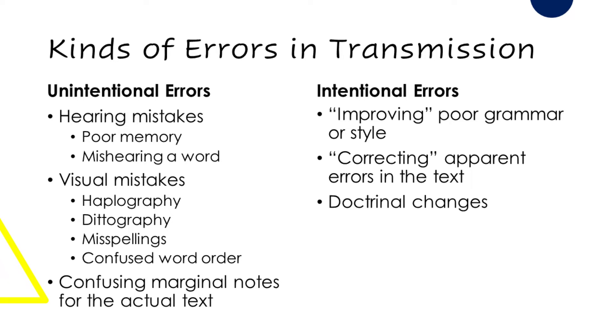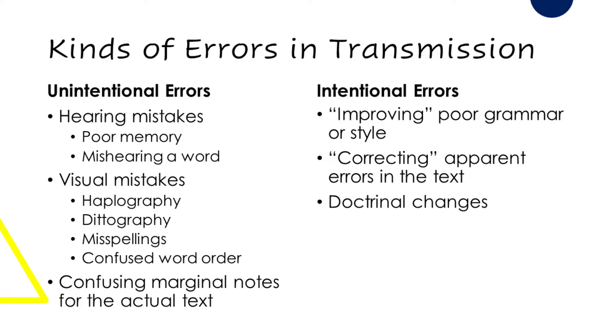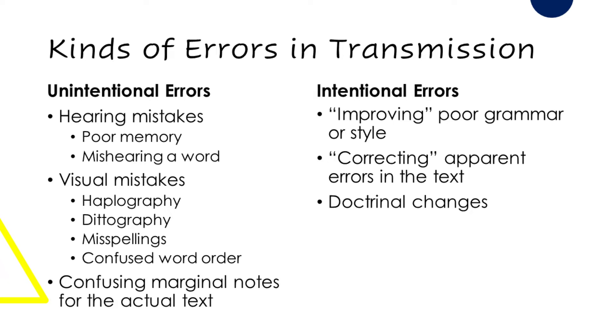Unintentional errors occur due to poor hearing or poor vision. Most of these manuscripts were produced in a scriptorium during the Middle Ages, where someone stood at the front of the room reading a text and others wrote down what they heard. Sometimes they heard the wrong thing or had poor short-term memory; other times there could be a haplography or dittography, misspellings, or confused word order. Another kind of unintentional error is when a marginal note or gloss inadvertently got copied into a later manuscript.